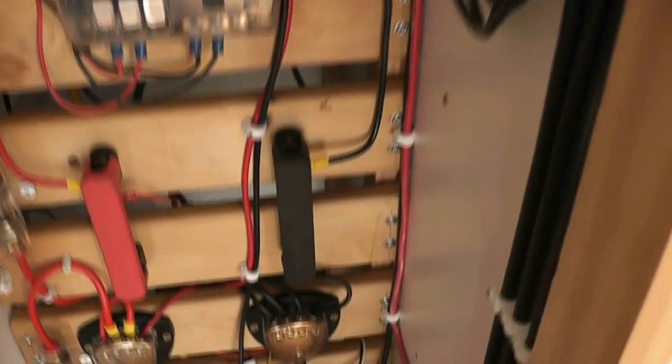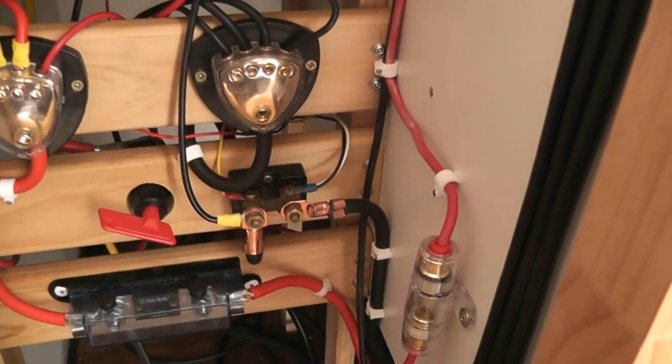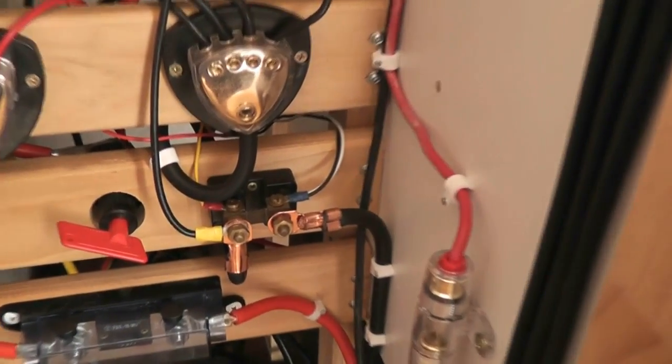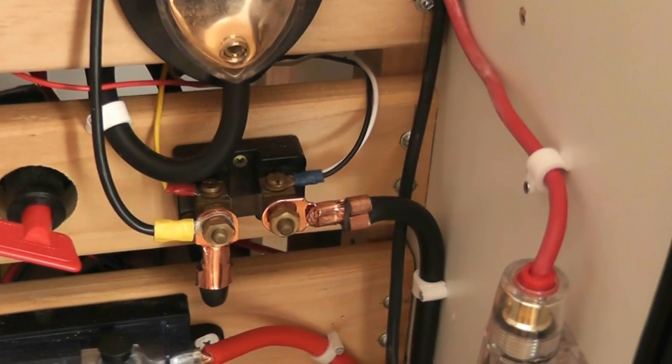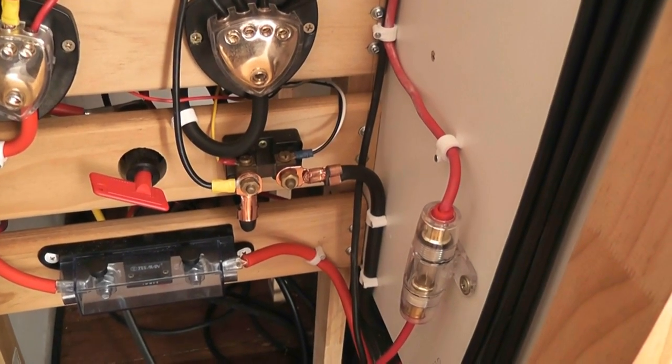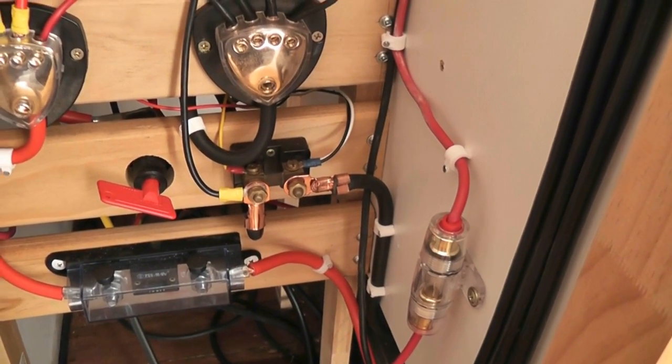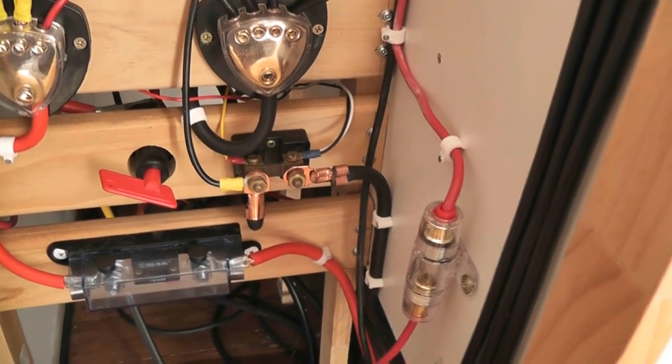Now it goes into this thing over here—that's the shunt. The purpose of the shunt of course is for the meter that monitors the voltage and current that gets connected to the battery, and the red wire goes straight on to the positive terminal of the batteries.